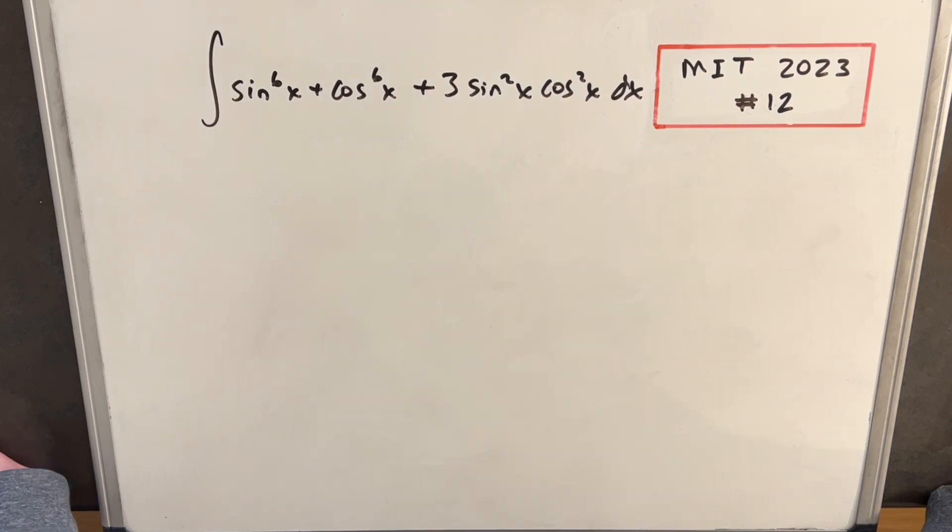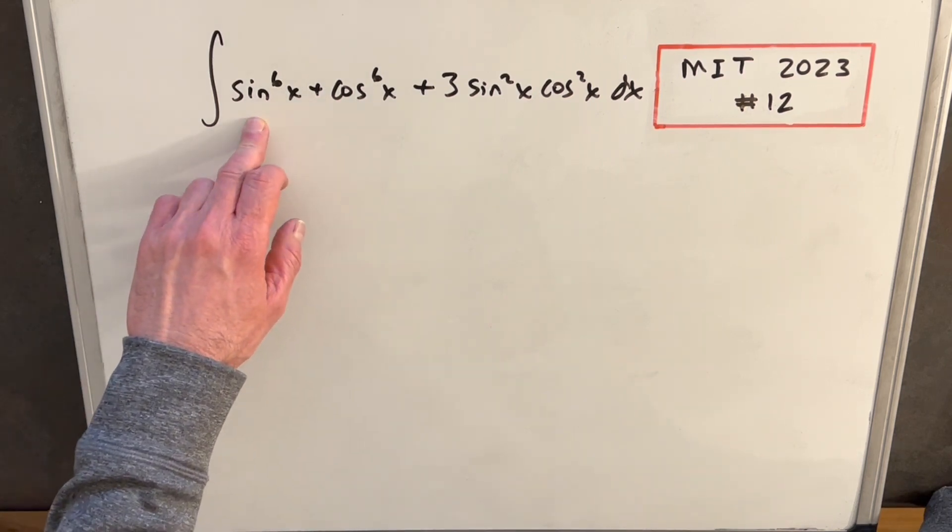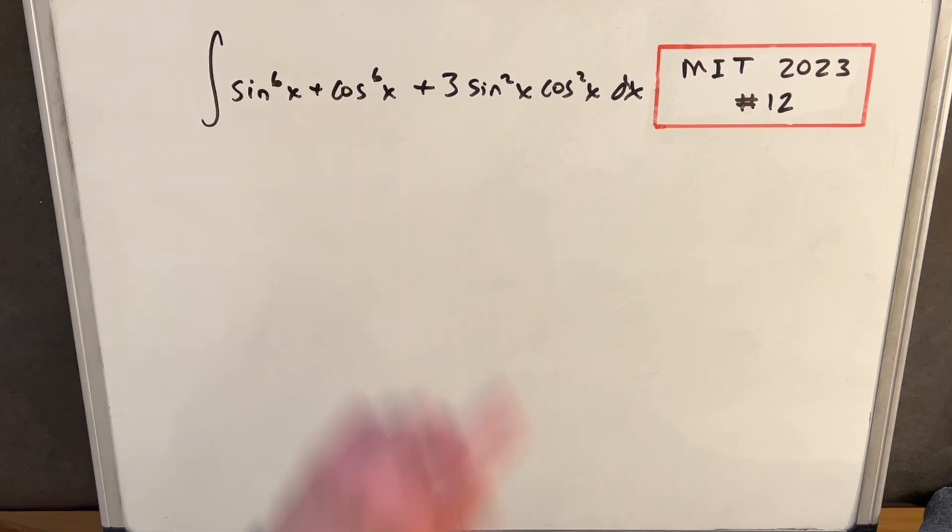When I looked at it, my first thought was this looks like something that was cubed. Just noticing if we have sine squared, sine squared cubed is sine to the 6x, same thing with cosine.